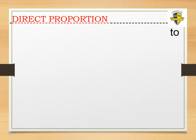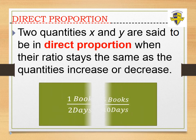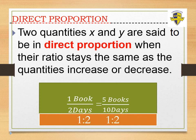Direct proportion: two quantities, x and y, are said to be in direct proportion when their ratio stays the same as the quantities increase or decrease. Remember the student — he reads one book in two days, and then five books in ten days. The ratio 1:2 and 5:10 simplify to the same value, one to two. Even as the number of books and days increase, the ratio stays the same. This is what we call direct proportion.